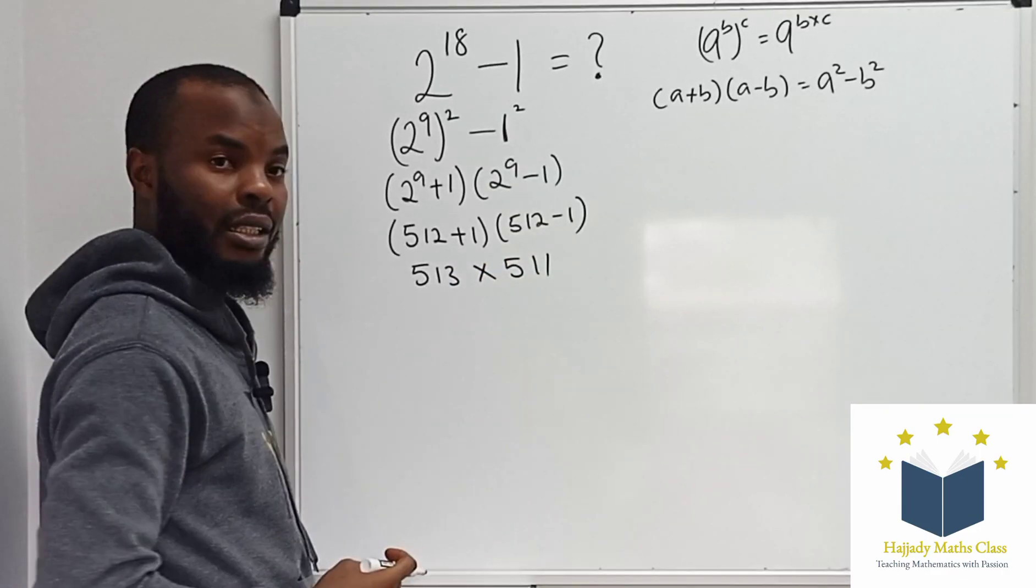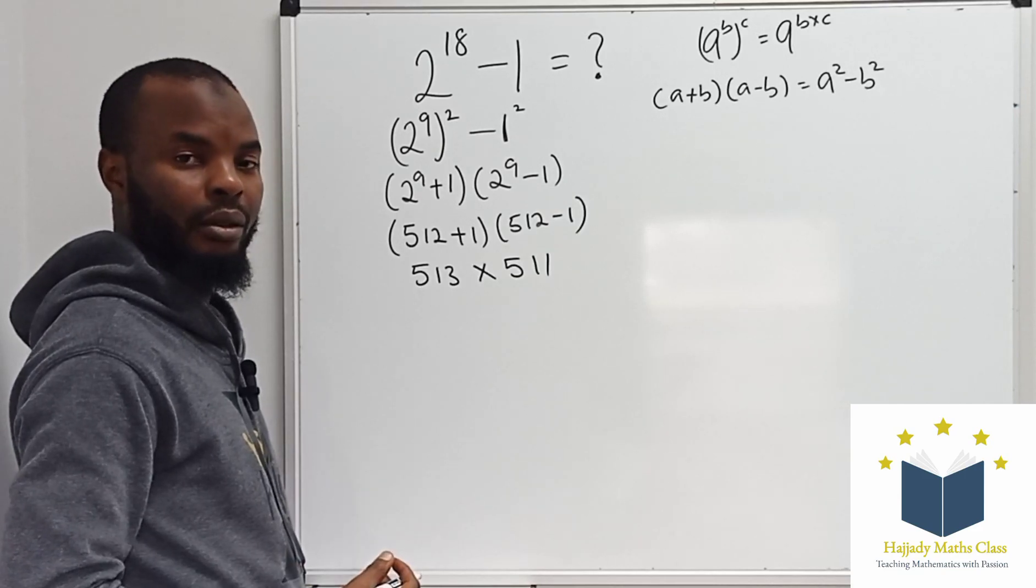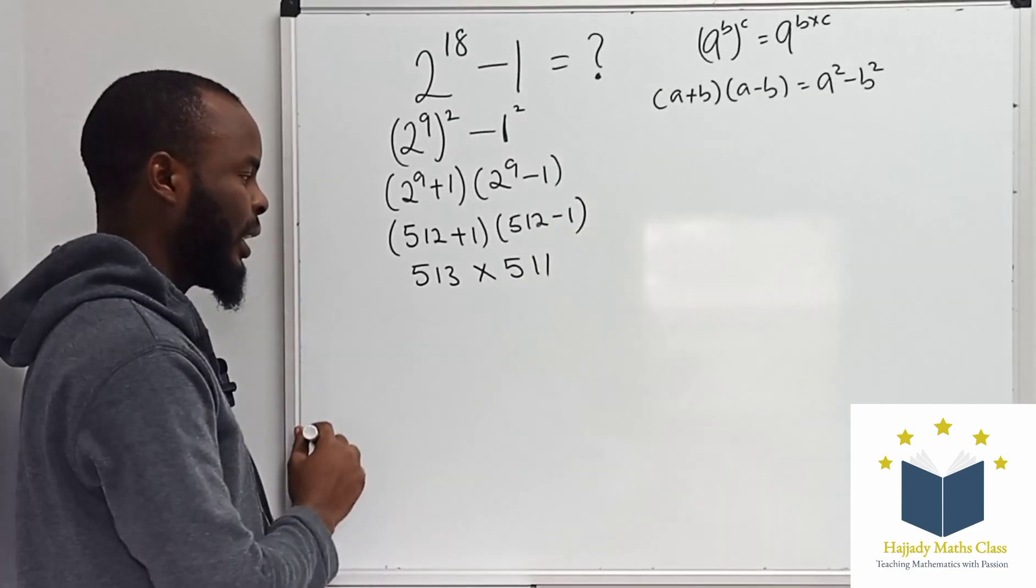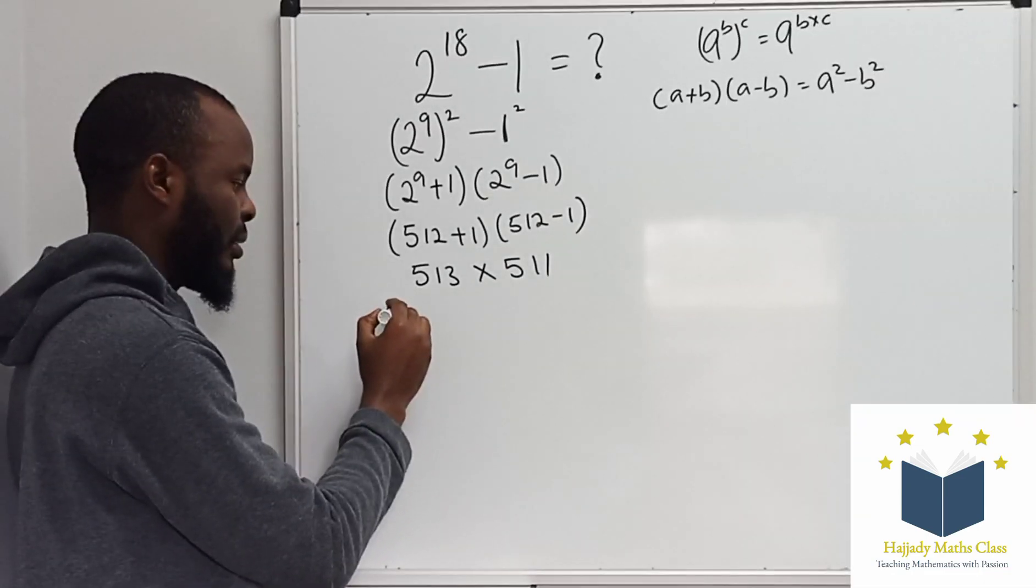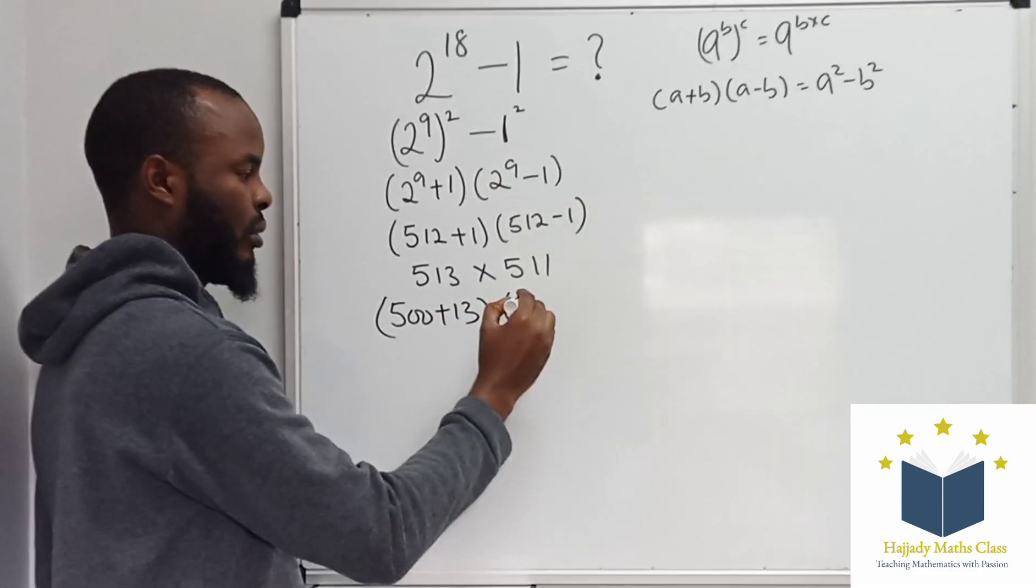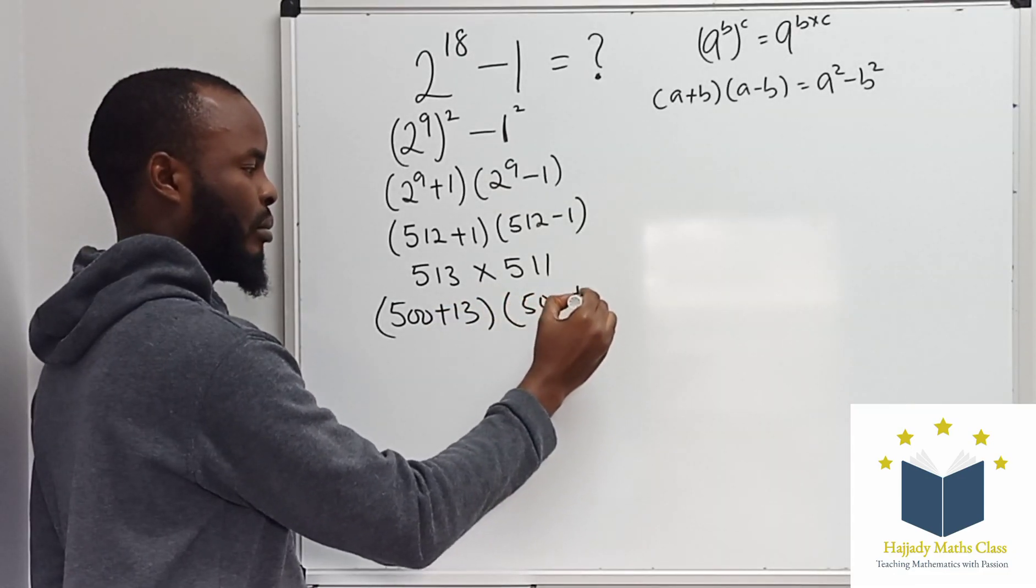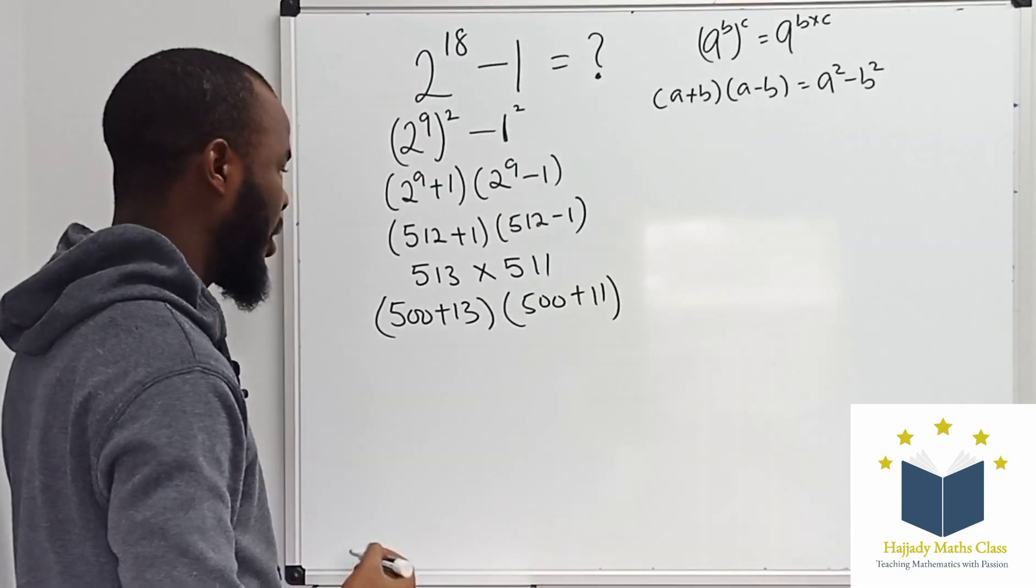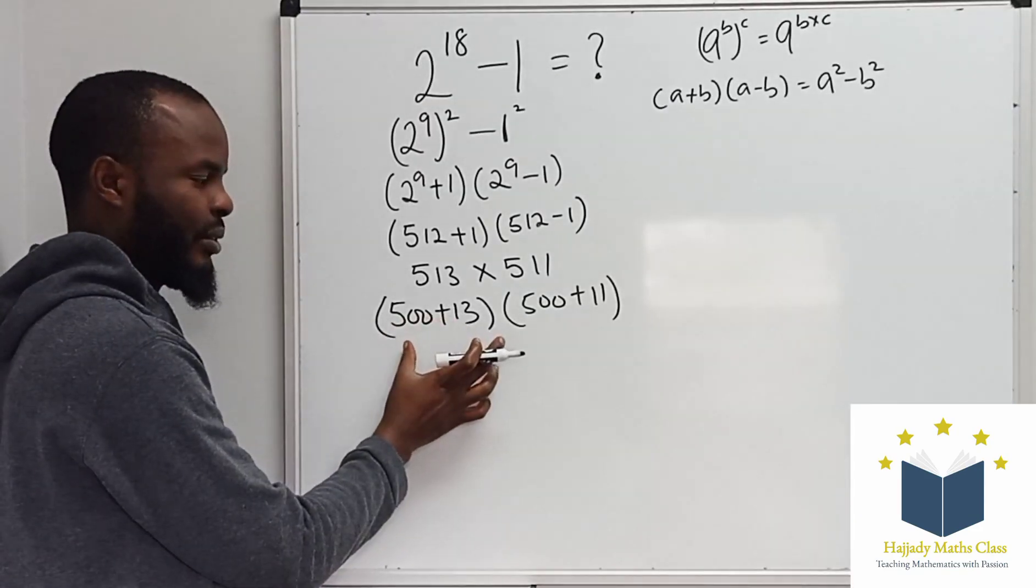So instead of multiplying this outright, let's break it down because we're not using the calculator. So 513 is the same thing as saying 500 plus 13, and 511 is 500 plus 11. So now, let's factorize.